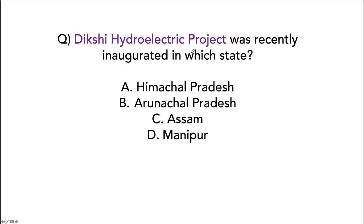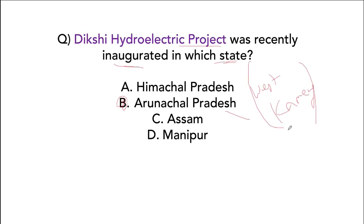The Dixi Hydroelectric Project was recently inaugurated in Arunachal Pradesh, in the West Kameng District. It is built on a river called the Fudungto River — P-H-U-D-U-N-G-T-O.